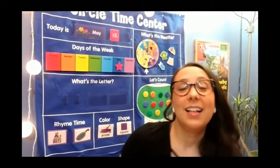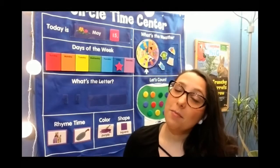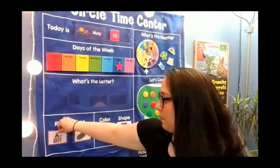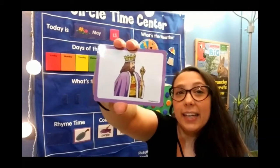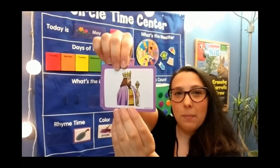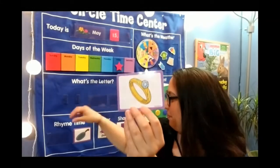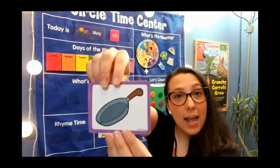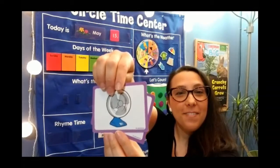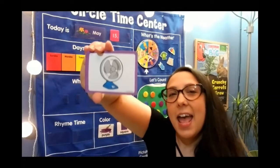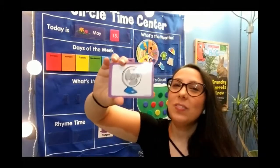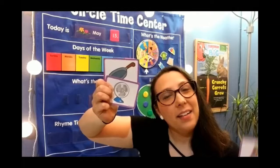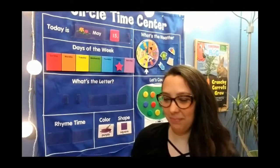Let's review our rhymes today. Do you know some words that rhyme? Words that sound the same? Can you remember what rhymes with king? King rhymes with ring. You're so smart. And do you remember what rhymes with pan? Pan rhymes with fan. I heard some friends saying 'can' and 'man' and all those words — they all sound the same. Great job, boys and girls. King and ring, man and pan — these are our rhyming pairs we learned this week. You're getting so good at rhyming.